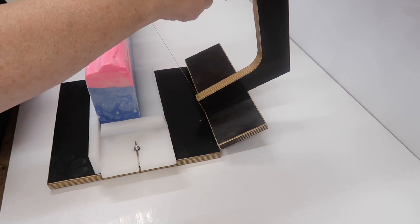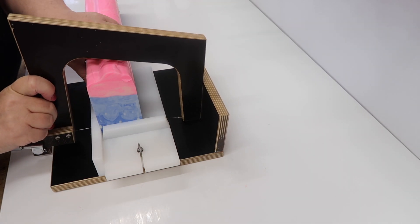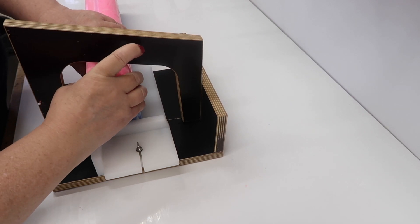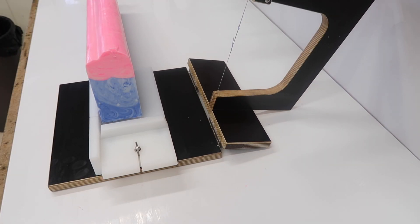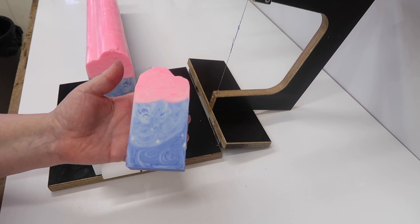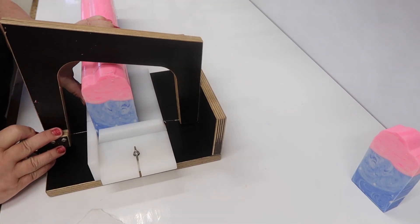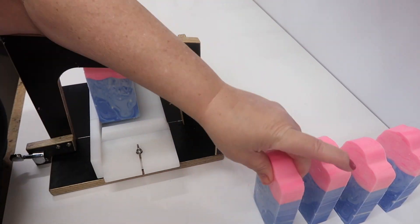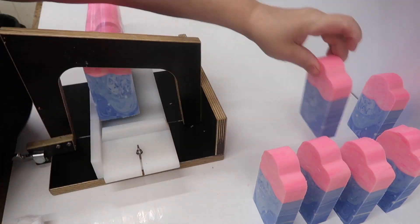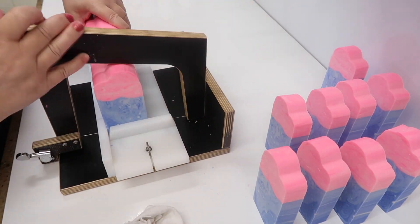The whole loaf actually weighs 3.8 kilos, so it's quite heavy. I'm cutting this at 2.5 centimetres because I just want to see what weight each bar is at that. 190. So that's just about right. That is so pretty, isn't it?